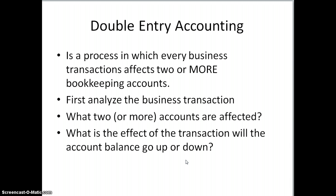The first thing you're going to do is analyze the business transactions — ask what is happening. So if I'm buying supplies for cash, what two accounts are affected? Both supplies and cash. Once you determine the two accounts being affected, you say: what is the effect of the transaction? Is the account balance going up or going down? If we're buying supplies for cash, our cash will go down, but we'll have more supplies. So we traded an asset — cash — for an asset — supplies.